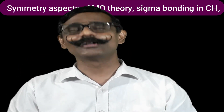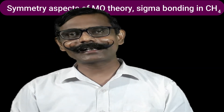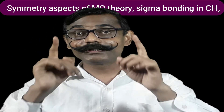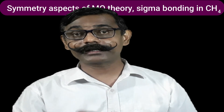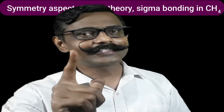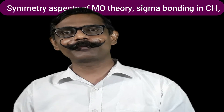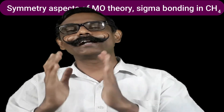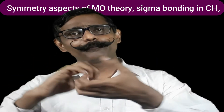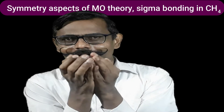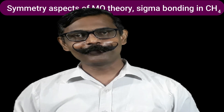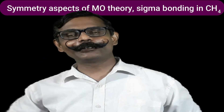Symmetry is related to the character table and Mulliken notations. To consider the symmetry concept, one principle is used — LCAO, Linear Combination of Atomic Orbitals. The third condition is that there should be appreciable overlap. About the second condition, we are working now, provided all other conditions are fulfilled.